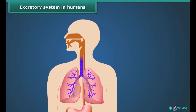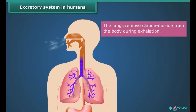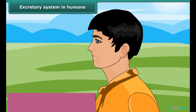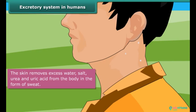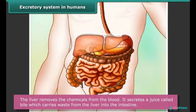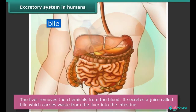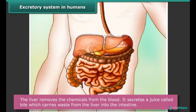The lungs remove carbon dioxide from the body during exhalation. The skin removes excess water, salt, urea, and uric acid from the body in the form of sweat. The liver removes chemicals from the blood and secretes a juice called bile, which carries waste from the liver into the intestine.